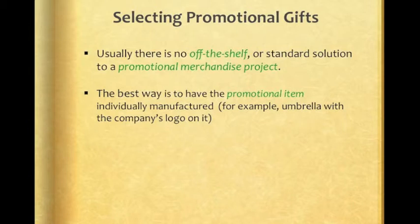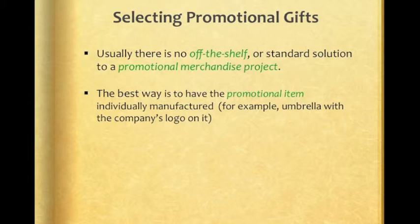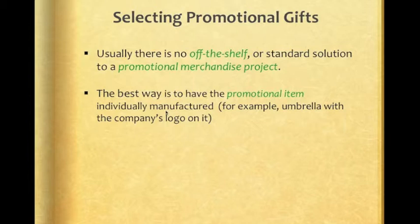通常像这样子的promotional item一定都是要去订做、特别去订做的。如果说你要送你的客户umbrella雨伞，那这个雨伞，你去买的off-the-shelf这些商品，他通常就是没有你的公司的logo。所以你要有代表公司的logo印在上面的时候，you have to make it individually manufactured，他一定是要特别去订做的。那这个客制化的订做，在英文里面我们叫做individually manufactured。